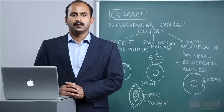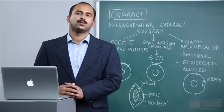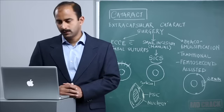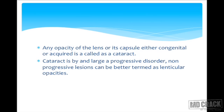In this module, we will discuss a disease that is really commonplace among most patients we see in the IOPD, that is cataract. According to its definition, cataract is an opacity in the lens or its capsule, either congenital or acquired. Cataract is by and large a progressive disease, and in case the opacity in the lens is fixed or non-progressive, it is called as lenticular opacity.